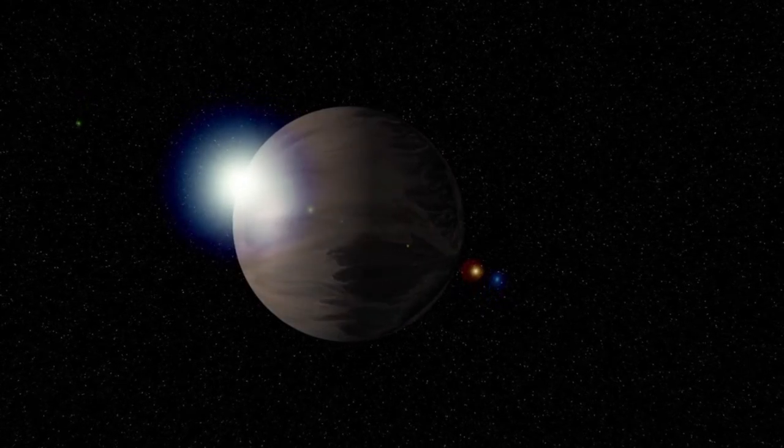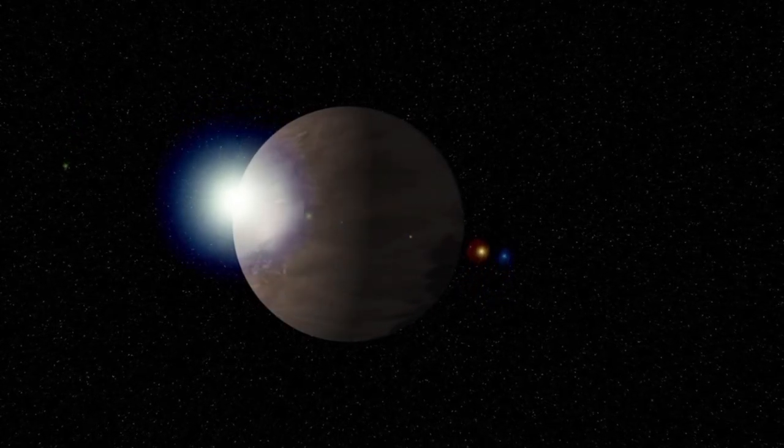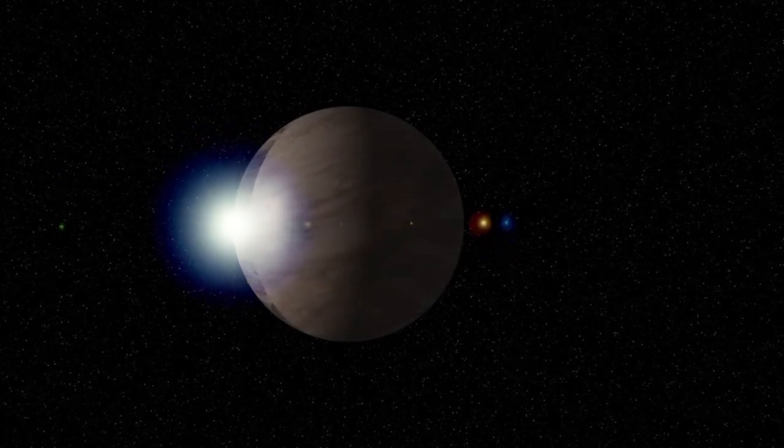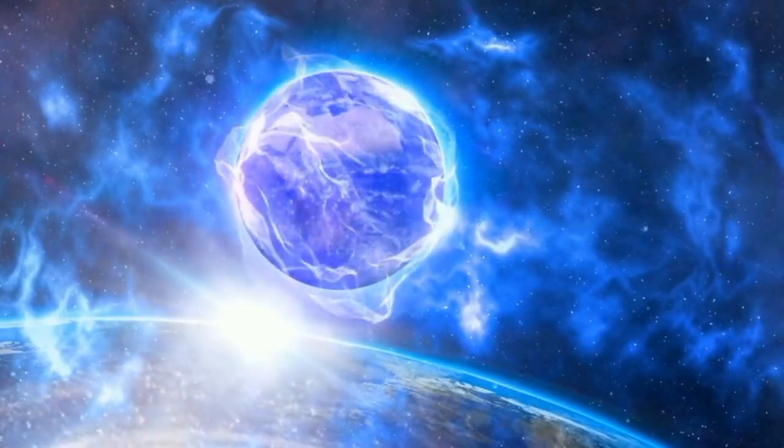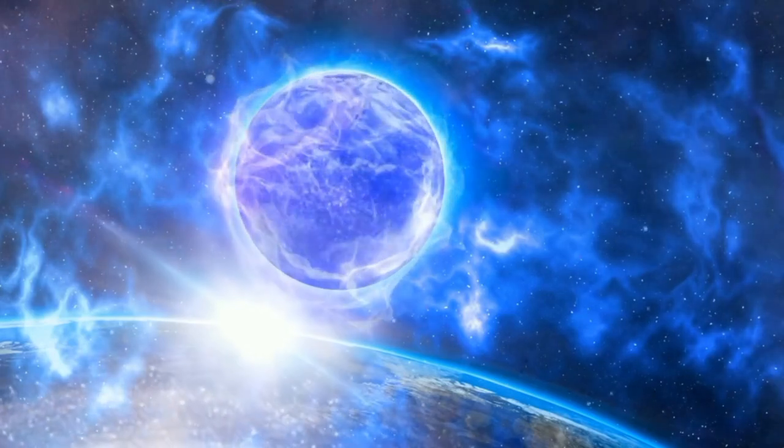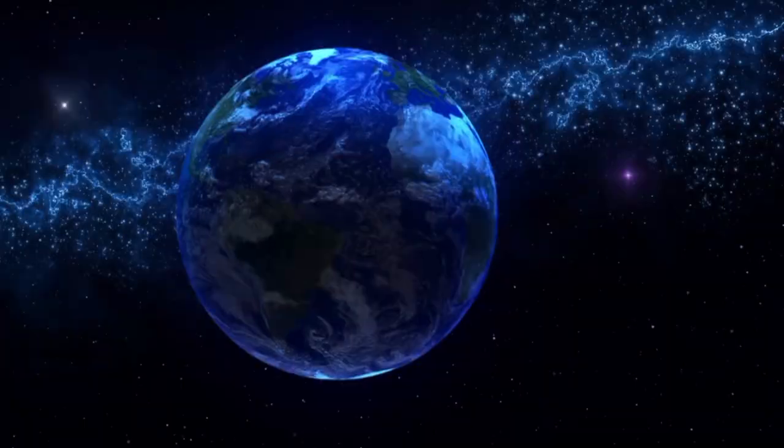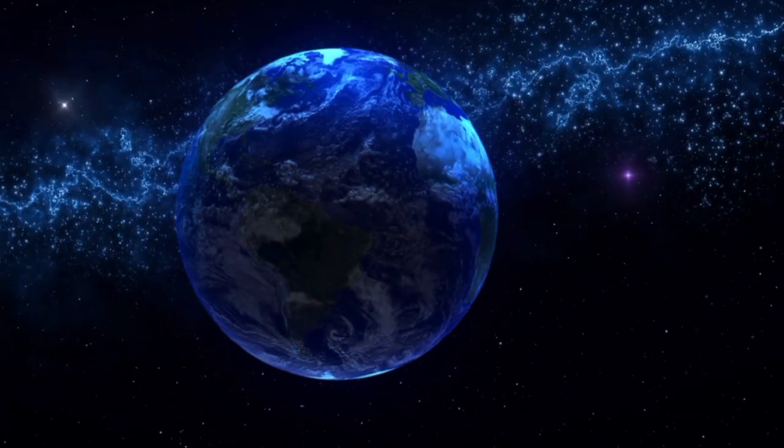One of the reasons scientists are so interested in Proxima b is its location in the habitable zone, where liquid water could potentially exist. Despite being dim compared to the Sun, Proxima Centauri emits enough infrared radiation that life-supporting conditions might be possible.